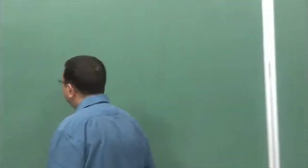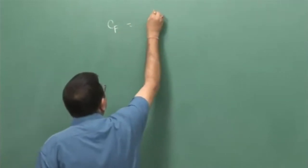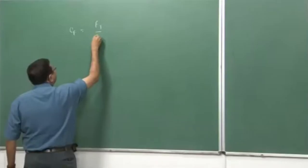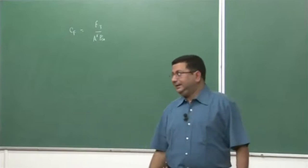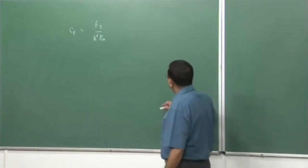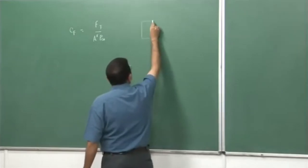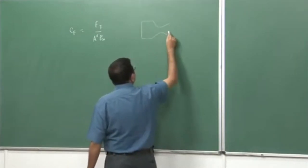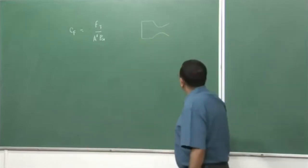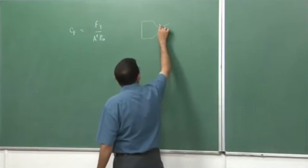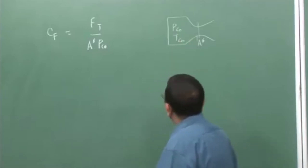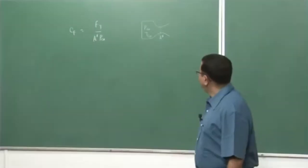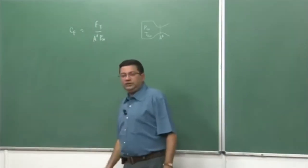We have listed the assumptions that are required. Then we have defined certain parameters. One of those parameters was the thrust coefficient, defined as F_t divided by A* times P_c0, where F_t is the thrust produced by the rocket, A* is the throat area for the converging-diverging nozzle. The combustion chamber conditions are P_c0 and T_c0, the stagnation pressure and stagnation temperature in the combustion chamber.